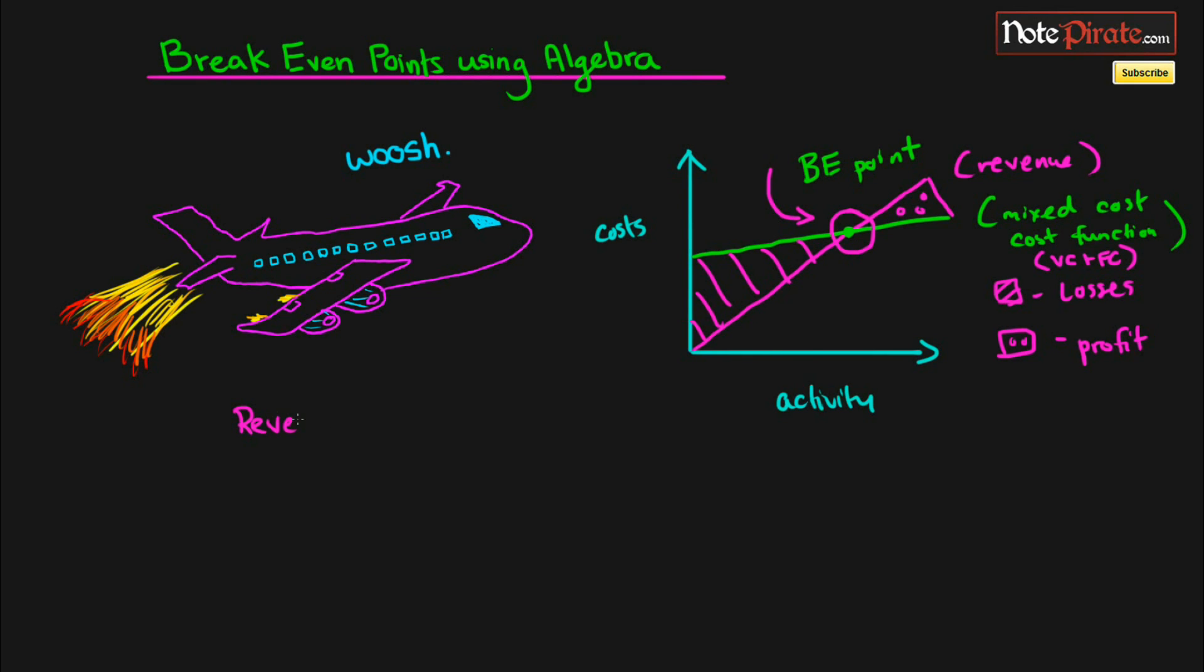Altogether this graph has three elements which we talked about last time: revenue, variable cost, and fixed cost. Since there are only two lines and those two lines encapsulate those three elements, we actually derived this break-even equation which is revenue minus variable cost minus fixed cost equals zero. We set it to zero because zero is our break-even point we want to solve for.